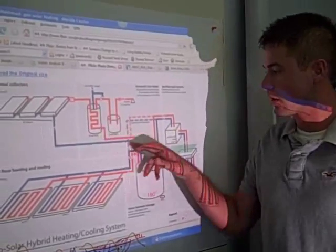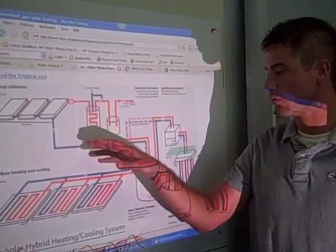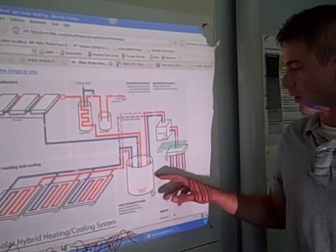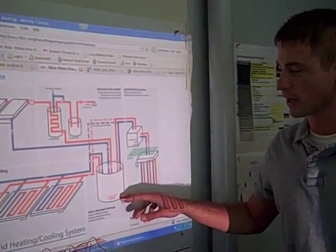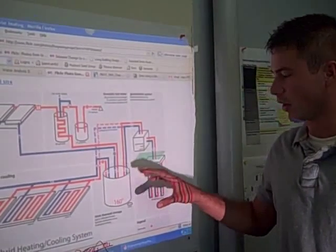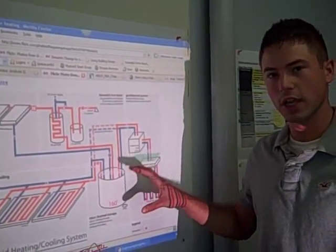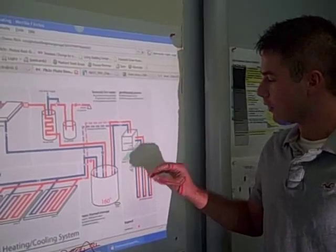From there, the hot water generated from the roof is pumped into a large mass thermal storage tank located inside the building. That is like the heartbeat of the system, where all of the heating energy is stored.